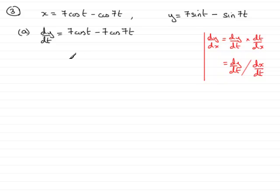We need to find dx/dt. So dx/dt, if we differentiate x with respect to t, differential of 7 cos t is going to be minus 7 sin t, and the differential of minus cos 7t, in other words, plus 7 sin 7t.